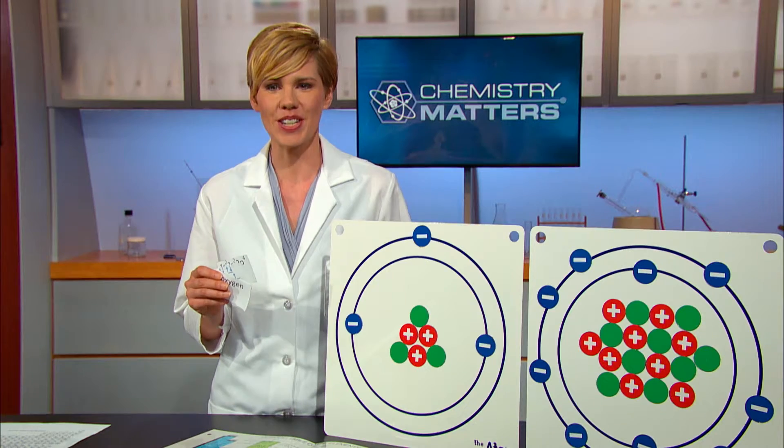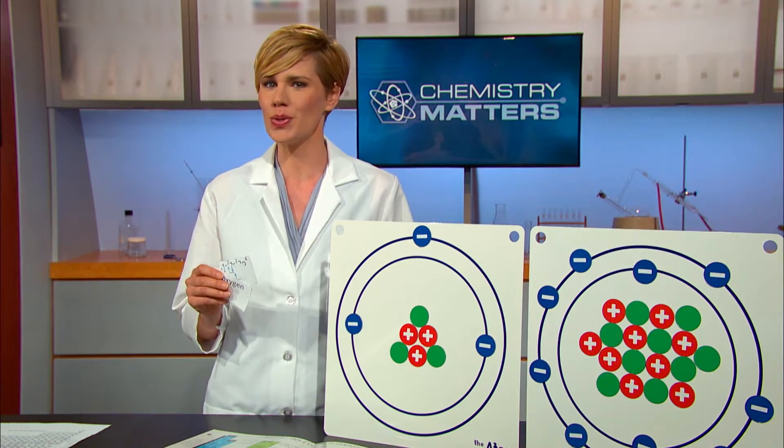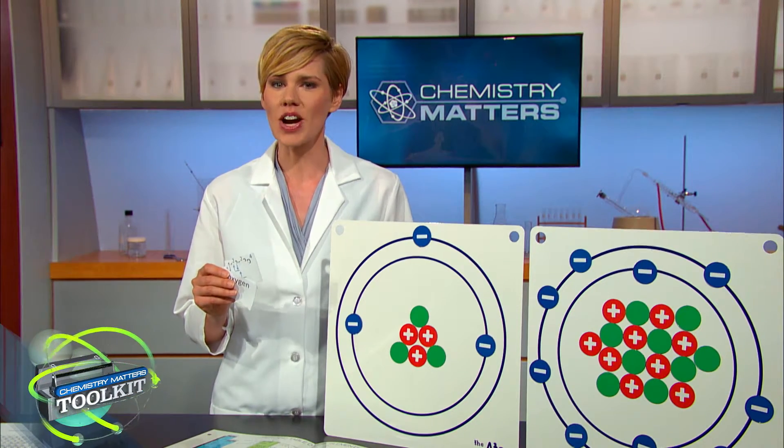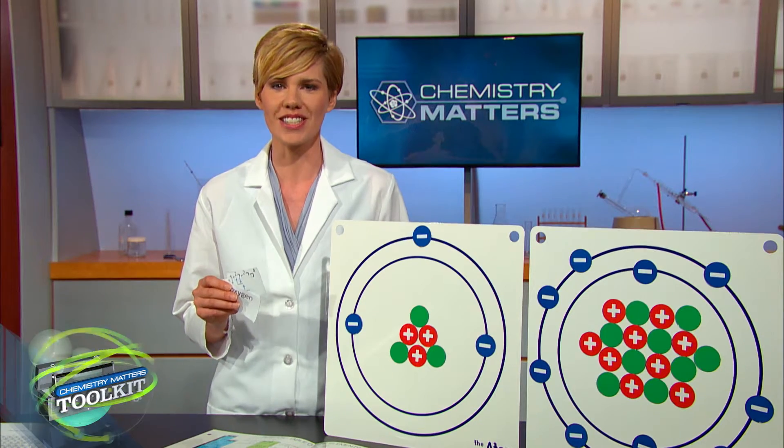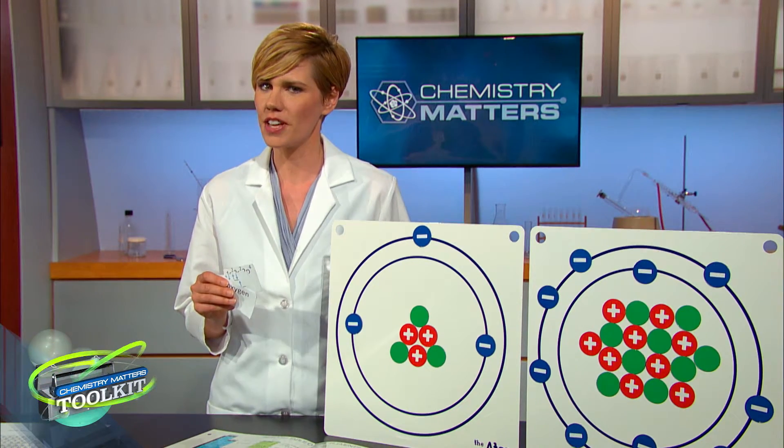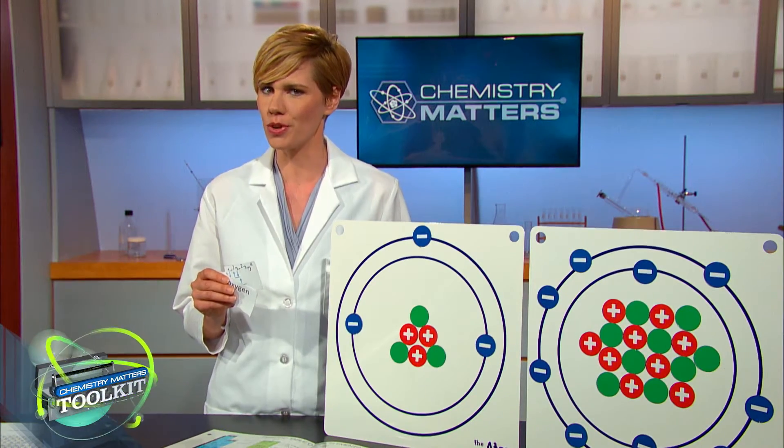If you've gotten your energy configuration cards from the Chemistry Matters toolkit and cut them up, then you can start by looking for ways to separate the cards into groups. See if you can figure out how the cards are related to each other before you sort them.